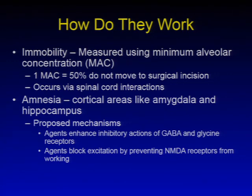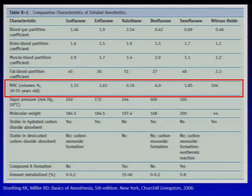The more practical thing is really just to talk about the MAC. MAC tells us what percentage gas concentration we have to get to in order to keep folks immobile, and it also tells us a bit about the potency of the gas. Something like halothane, where the MAC is very low, is a very potent gas, where desflurane at 6 is not quite so potent.